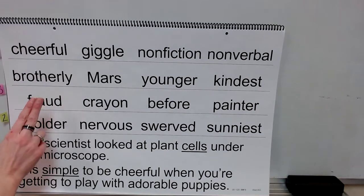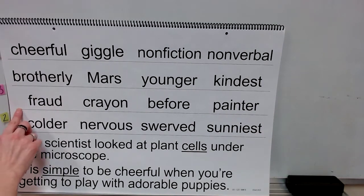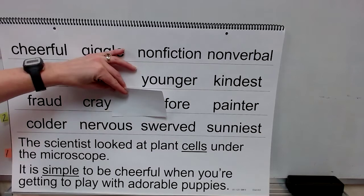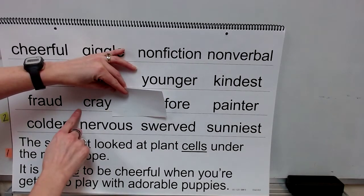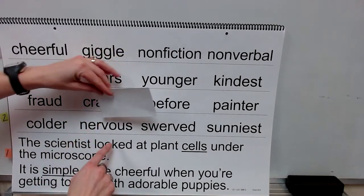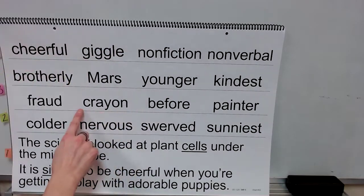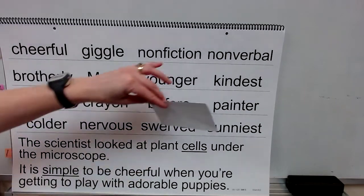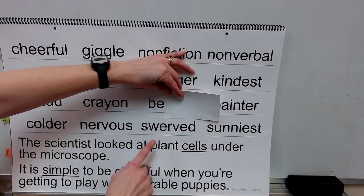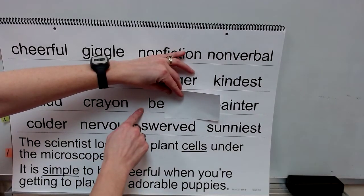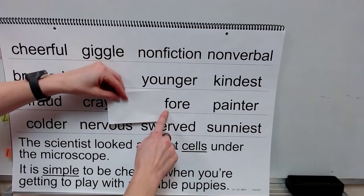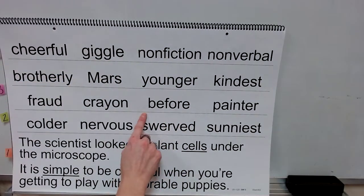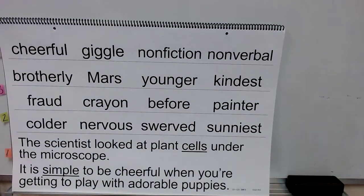Sound: ah. Word: fraud. Syllable: cray. Syllable: on. Word: crayon. Syllable: be. Syllable: for. Word: before.